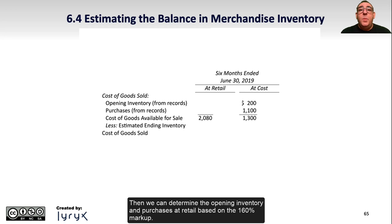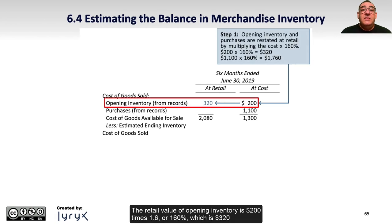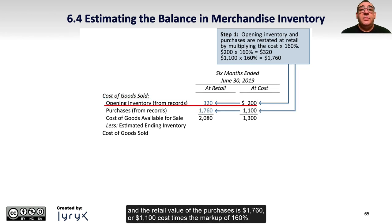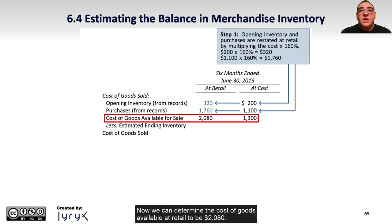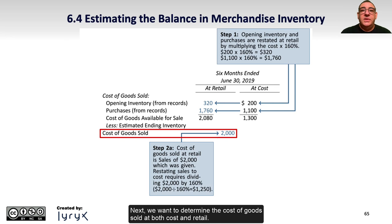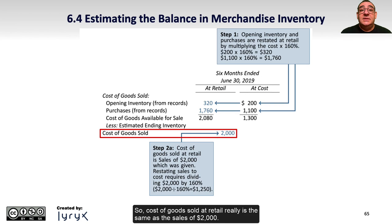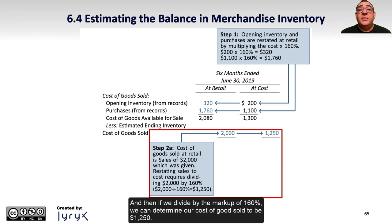Then we can determine the opening inventory and purchases at retail based on the 160% markup. The retail value of opening inventory is $200 times 1.6, or 160%, which is $320, and the retail value of the purchases is $1,760, or $1,100 cost times the markup of 160%. Now we can determine the cost of goods available at retail to be $2,080. Next, we want to determine the cost of goods sold at both cost and retail. Since the sales are $2,000, that is the retail value of the items sold — so cost of goods sold at retail equals sales of $2,000. Dividing by the markup of 160%, we can determine cost of goods sold to be $1,250.